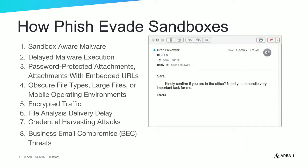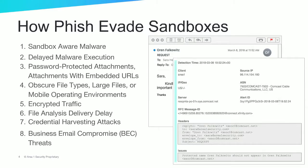A similar case is a business email compromise threat. These are targeted phishing campaigns that rely on impersonation to trick victims into providing confidential information or transferring funds to the hacker. This slide shows a recent example of a phish sent to an Area 1 employee that looks like it's from our CEO, but is actually from an imposter. Again, in this case there's no file download, so a sandbox can't detect this phish.